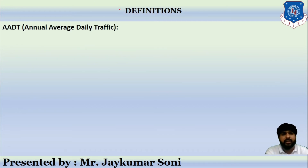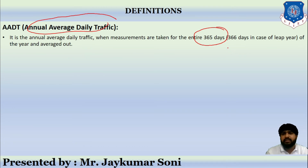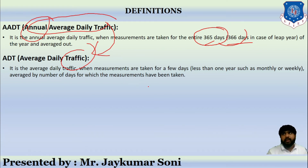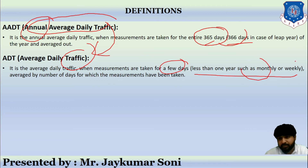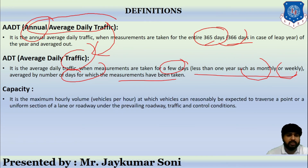Now let us discuss remaining important definitions. AADT stands for Annual Average Daily Traffic — the average daily traffic measured over an entire year, taken as 365 days or 366 days for a leap year. ADT stands for Average Daily Traffic — the average daily traffic when measurements are taken for fewer days, such as a month or weeks, and averaged by the number of days measured.